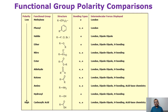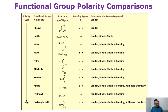Ester involves London dispersion forces, dipole-dipole interaction, and hydrogen bonding. Ketone has the same London dispersion forces because of the alkane chain, dipole-dipole interaction because of the oxygen which is a highly electronegative atom, and hydrogen bonding can also form with the oxygen present on the ketone functional group. Amino can be retained based on London dispersion forces because the alkane chain is highly nonpolar and interacts with the stationary phase via London dispersion forces.